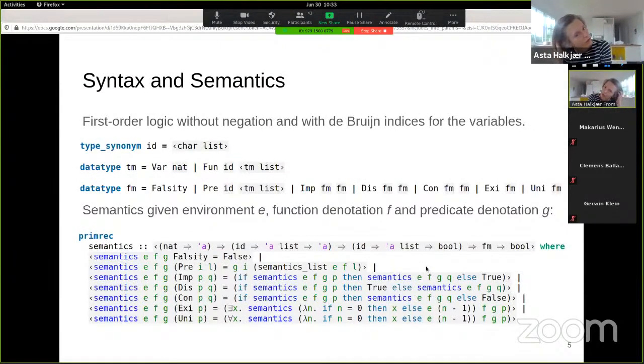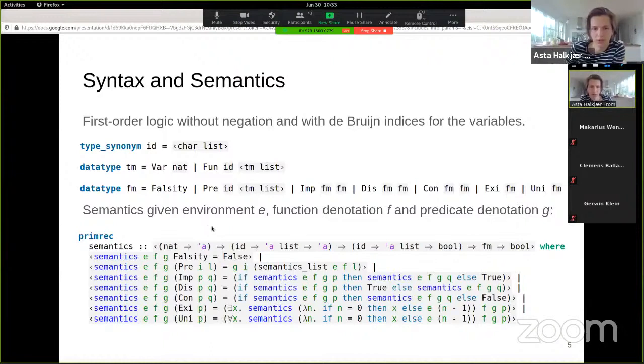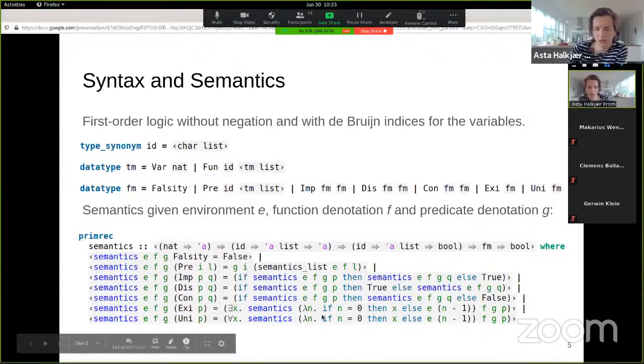So just to briefly introduce, syntax and semantics are its first order logic without negation. We use the De Bruijn indices for the variables, our identifiers are just strings. So we don't have negation, but otherwise we have the usual connectives and both quantifiers. The semantics are as you expect them to be, given an environment, a function denotation, and a predicate denotation. You can see the quantifier cases, there's some shifting of variables to do with the De Bruijn indices.